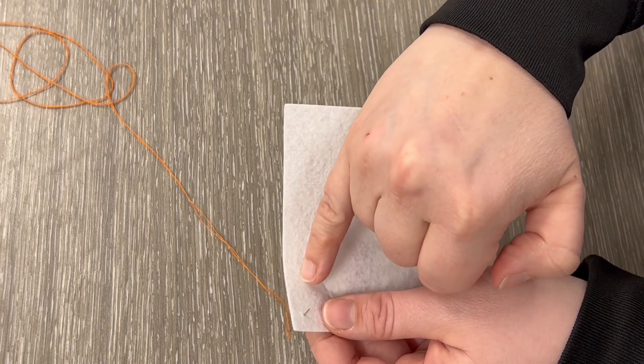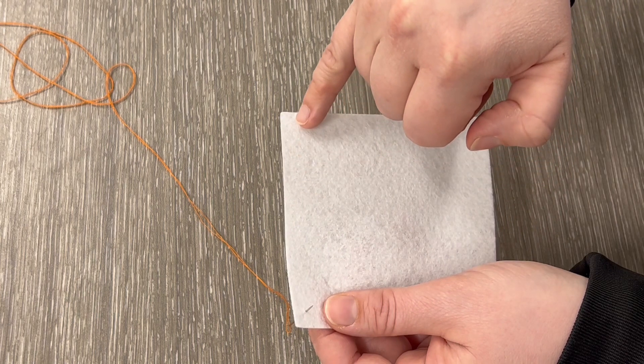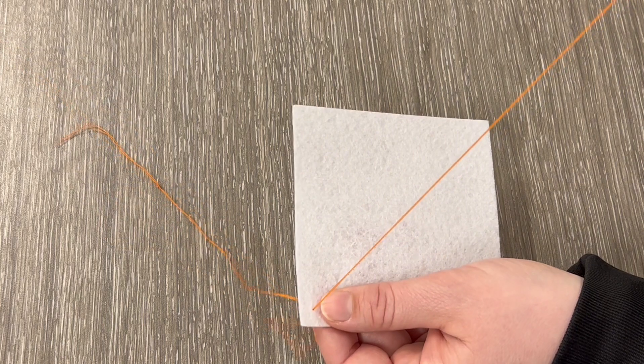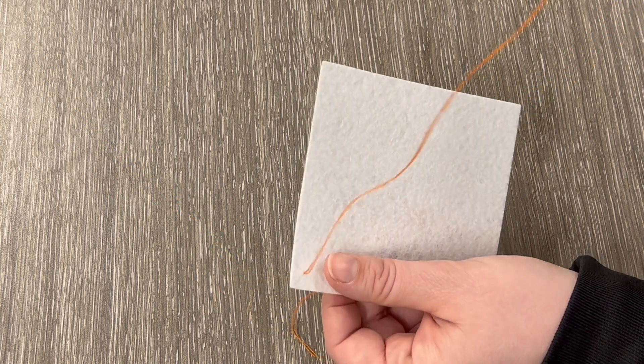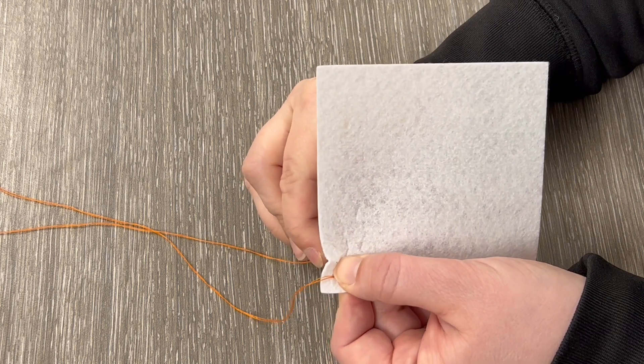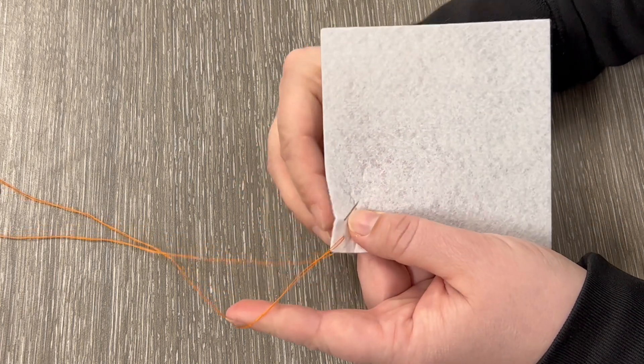I'm going to pretend that I have this imaginary line. If you'd like to draw an actual line about a quarter inch down, you can. I'm going to go from the back to the front, and then I'm going to bring that around again, working my way down that line, back to front.